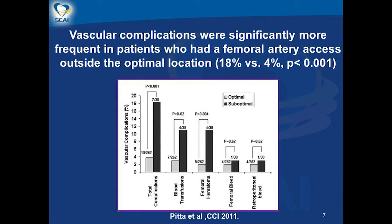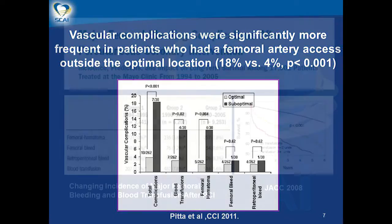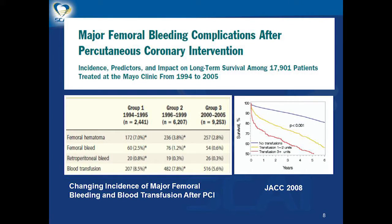Vascular complications were significantly more frequent in patients who had femoral artery access outside the optimal location. The incidence of femoral artery bleeding declined significantly from the earliest to the contemporary time period in a Mayo Clinic series of 17,000 patients. Adverse outcomes of major femoral bleeding included prolonged hospital stay and increased requirement for blood transfusion. Blood transfusion and major femoral bleeding were both associated with decreased long-term survival, driven by a significant increase in 30-day mortality.